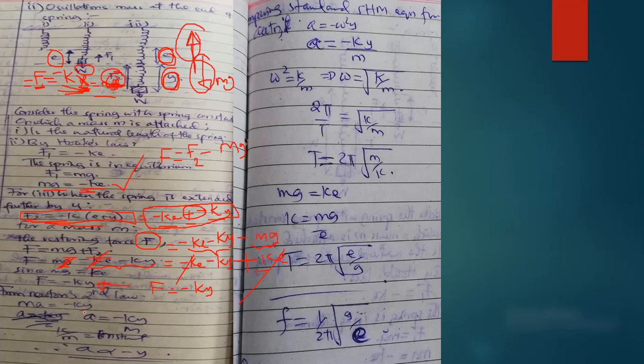By Newton's second law, m times acceleration equals negative ky. So A is equal to negative ky divided by m. We know ke over m is constant. Hence, acceleration is directly proportional to y but opposite in direction, which means there's a negative sign. Hence, it's simple harmonic motion.